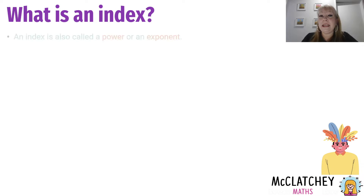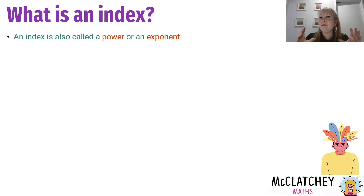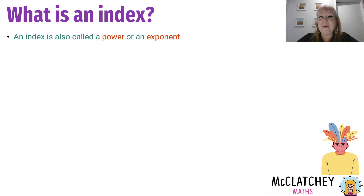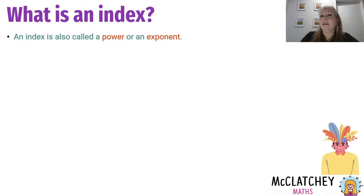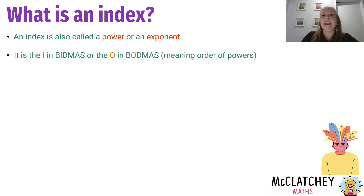Let's start with what an index is. In different countries, indices have different names. Index is a singular word; indices is the plural for index. We've also called those powers, so you may hear me calling that a power during this video or in future videos. Particularly in the USA, they also call it an exponent. So lots of different names all mean the same thing.